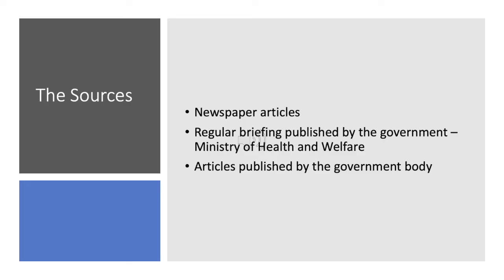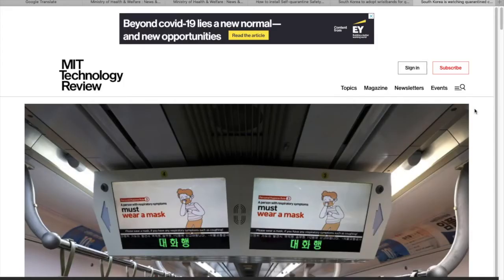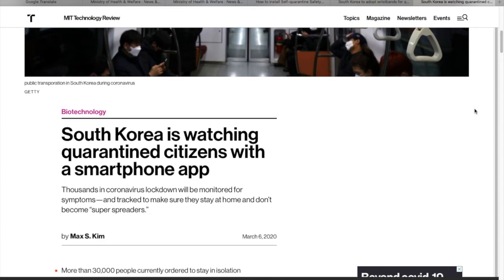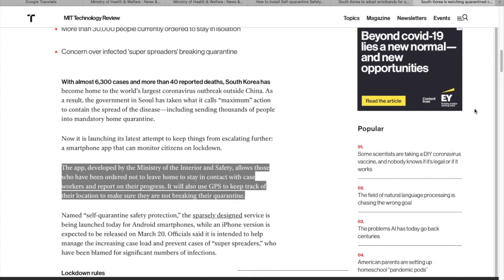In this study, all of the information regarding the utilization of Self-Quarantine Safety Protection app in South Korea is gathered from multiple sources such as newspaper articles, regular briefings published by the government or the Ministry of Health and Welfare, and articles that are published by the government entities. Here is an example of a newspaper article that is used as the source of my study. It can be seen here that this article provides information about Self-Quarantine Safety Protection app, which is the app that is used to monitor those in quarantine. For example, it provides information regarding the developer of this app, which is the Ministry of Interior and Safety, to track the location of those in quarantine and to enable those in quarantine to report their symptoms' progress.